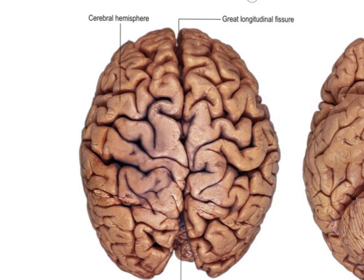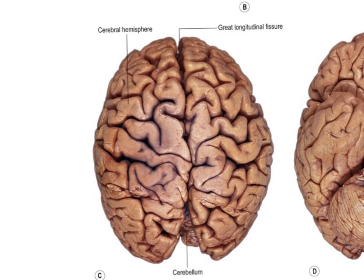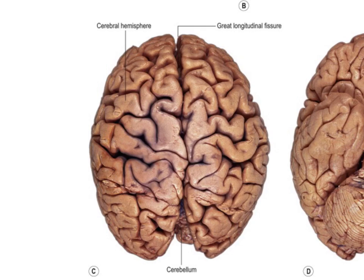Now let's take a look at a superior view of the cerebral hemisphere. We're looking down onto the cerebral hemisphere from the top, and we can see a major feature here, which is this great longitudinal fissure - a longitudinal fissure separating the left and right hemispheres. If you were to gently prise this apart and open up the longitudinal fissure and look down into the space, you would see the corpus callosum joining up the left and right hemispheres.